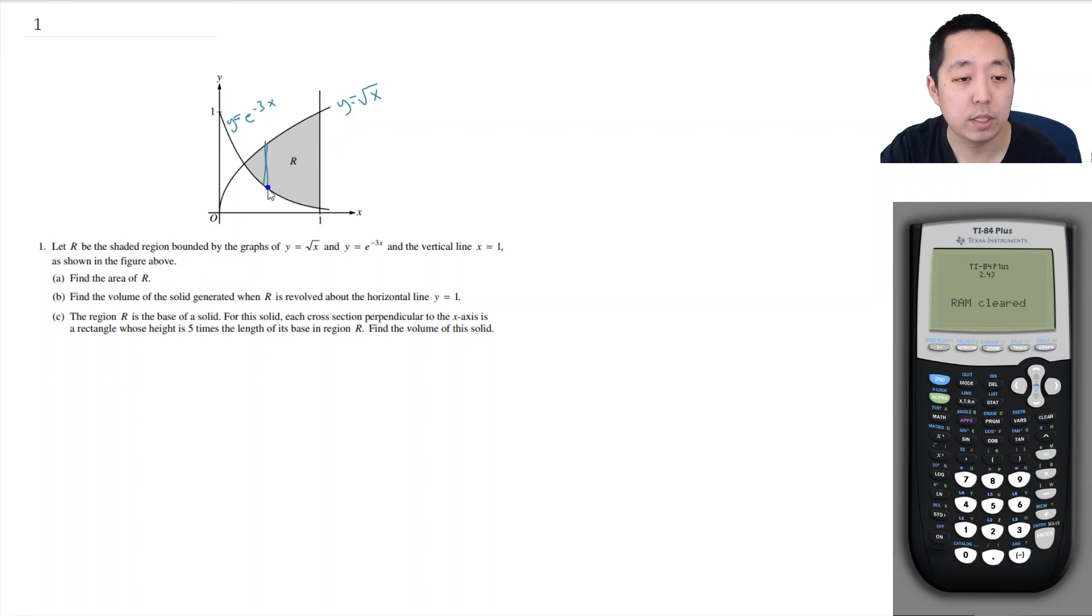Find the area of R. Well my representative rectangle is going to look like something like this. I want to find the area of that rectangle and sum up the rectangles. So the area of this rectangle, if I look at this rectangle, it has a width dx. The difference in the heights is the height of this rectangle, the difference between the top and the bottom curve. So this height is square root of x minus e to the minus 3x. So the area of this rectangle is square root of x minus e to the minus 3x dx. It's the width of the rectangle times the height of the rectangle. And then I want to sum all those rectangles from this point to x equals 1.